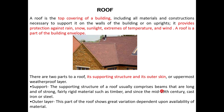The supporting structure of a roof usually comprises beams and trusses — long, strong and fairly rigid materials such as timber are also used as supporting elements. The outer layer shows greater variation; it can be GI sheets, aluminum sheets, or shingles, so it has a wide variety of choices. The main important function of a roof is to provide protection against rain, snow, sunlight, extremes of temperature, and wind.